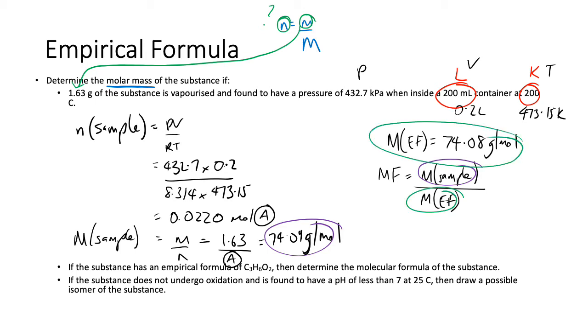Just remember that the molecular formula is equal to the molar mass of the sample over the molar mass of the empirical formula, which happens to be over here, times the empirical formula. So 74 and a bit over 74 and a bit times C3H6O2. That's effectively one. So therefore, the molecular formula is just C3H6O2.